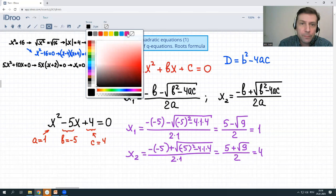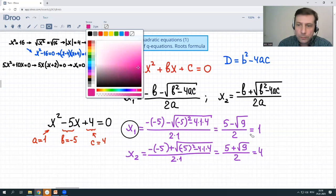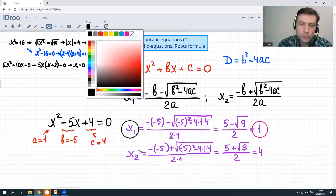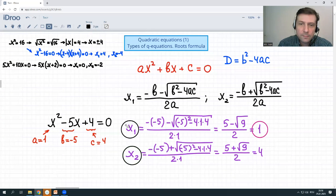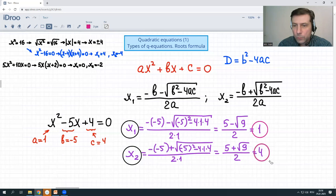So we have here, let's say x1 x sub 1 is equal to 1 and x sub 2 is equal to 4.